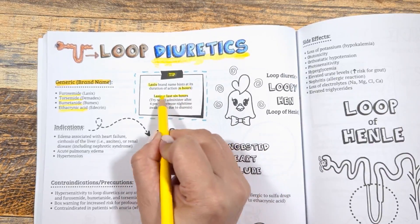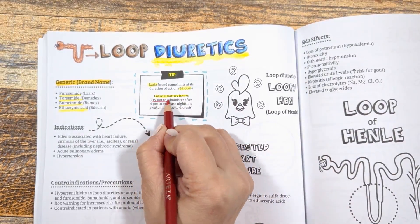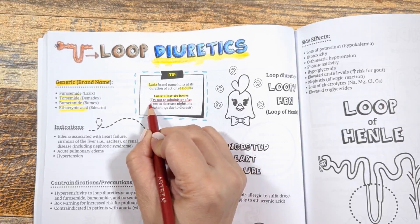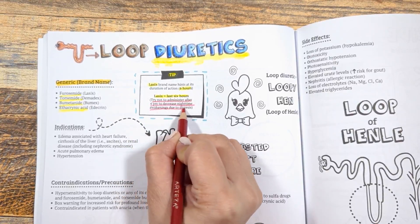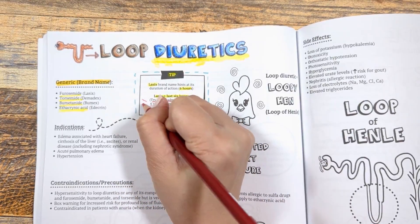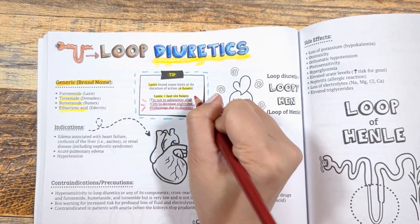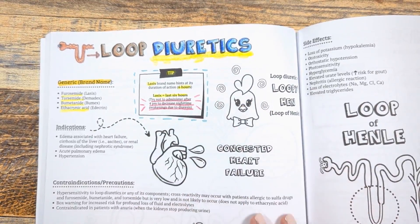A brand name tip: Lasix's brand name hints at its duration of action. Lasix lasts six hours, so you want to counsel patients to not take this after 4 PM to decrease nighttime bathroom trips.